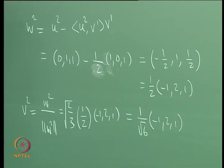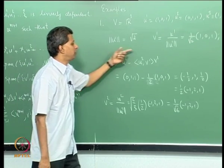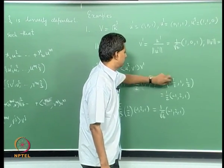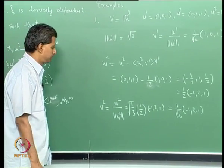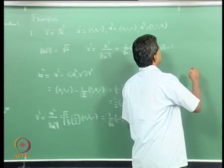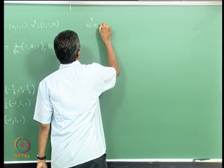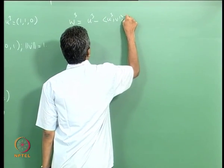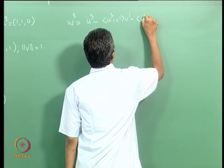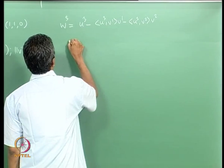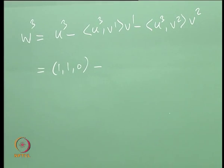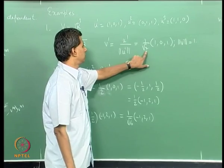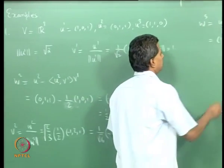We verify that ‖v_2‖ = 1, since (1 + 4 + 1)/6 = 1, and w_2 must be orthogonal to v_1, which is clear: the dot product gives -1/2 + 1/2 = 0. So this is v_2. For v_3, we construct w_3 = u_3 minus ⟨u_3, v_1⟩v_1 minus ⟨u_3, v_2⟩v_2.